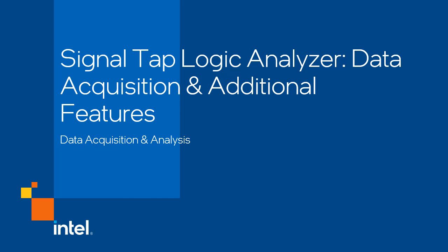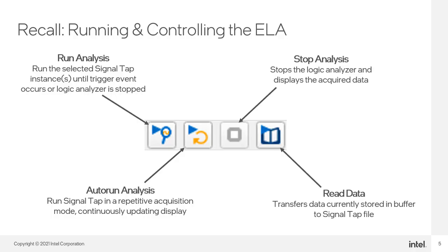With the target device programmed with the Logic Analyzer, we can finally run the Logic Analyzer and analyze the data captured for debugging purposes. When describing the operation of a Logic Analyzer, the terms run or running are often used. Running the Logic Analyzer means to start its monitoring of trigger-enabled signals, looking for the combination of signal states that satisfy the trigger conditions. This is also sometimes referred to as arming the Logic Analyzer, a term often used with external test equipment.